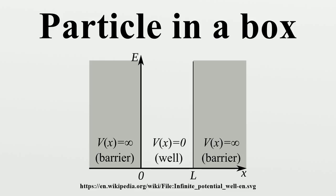One-dimensional solution. The simplest form of the particle in a box model considers a one-dimensional system. Here, the particle may only move backwards and forwards along a straight line with impenetrable barriers at either end. The walls of a one-dimensional box may be visualized as regions of space with an infinitely large potential energy. Conversely, the interior of the box has a constant, zero potential energy. This means that no forces act upon the particle inside the box and it can move freely in that region.